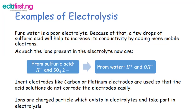Sulfuric acid is a good conductor, so when a few drops of sulfuric acid are mixed with pure water, it increases the conductivity by adding more mobile ions. The ions present in the electrolyte are: from sulfuric acid — hydrogen ion (H⁺) and sulfate ion (SO₄²⁻); from water — hydrogen ion (H⁺) and hydroxide ion (OH⁻).